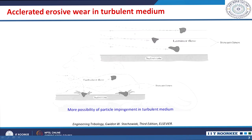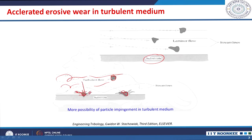If you have laminar flow, the particles move in streamlines without substantially impinging on the surface, so material is not substantially removed. But if you have turbulent flow of the medium, the particles are more likely to impinge on the surface, leading to more ploughing or cracking and more wear. Compared to laminar flow, turbulent flow causes particles to impinge more on the surface, leading to accelerated erosive wear.